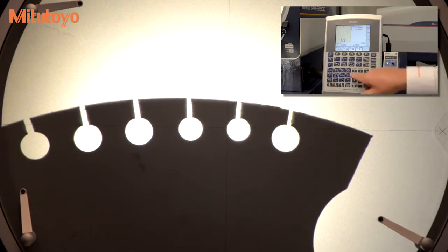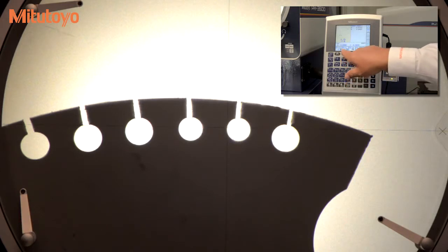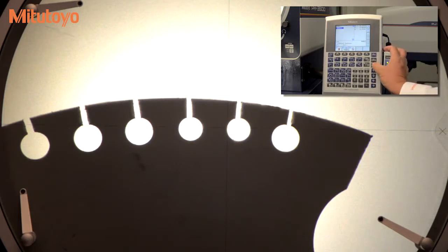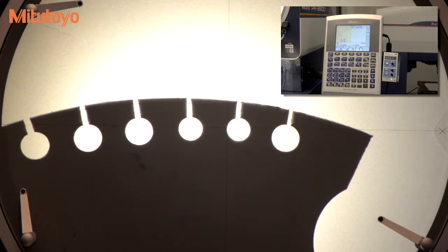Now select the line function and recall the last two features that you have measured. The optional QM Data 200 will use the centers of the circles just measured and calculate the true distance between centers, regardless of the orientation of the coordinate system.